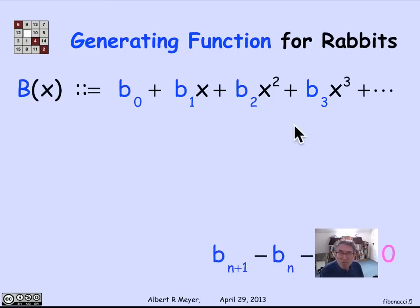Now, if I rewrite the recurrence relation for Bn plus 1 this way, Bn plus 1 minus Bn minus Bn minus 1 equals 0, that's a hint about the strategy that I'm going to use to find a closed form expression for the generating function B of x. Namely, the fact that B of n plus 1, if I subtract Bn and then Bn minus 1, I get 0.